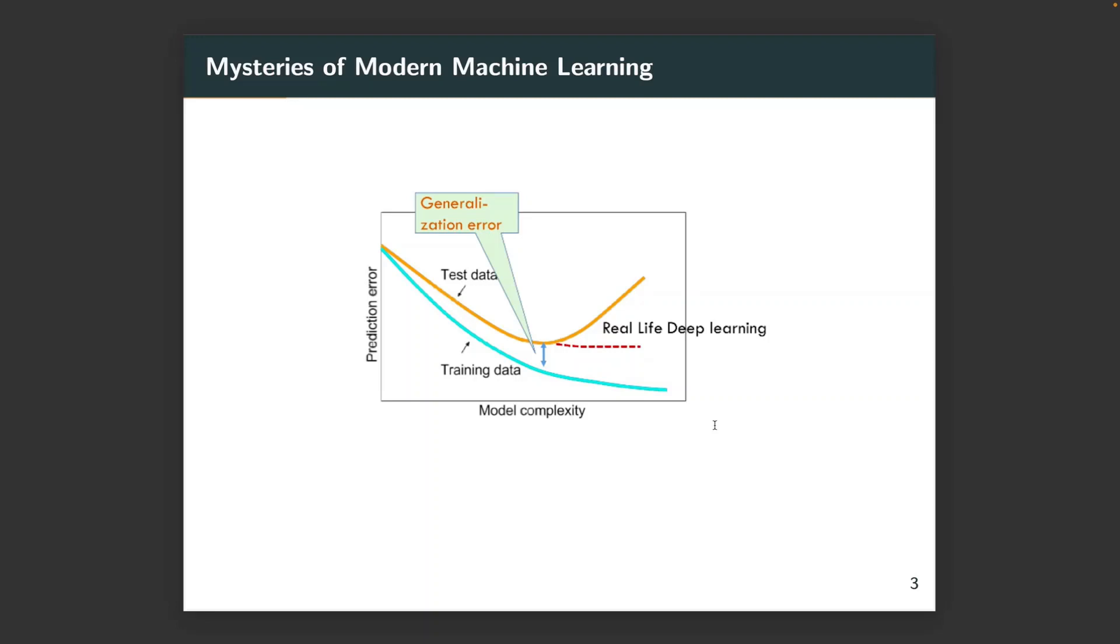However, for deep learning, the traditional generalization bounds cannot work. Even if neural networks are severely over-parameterized, they can still reach very good generalization performance. Actually, it has some special generalization pattern called double descent that attracts a lot of research efforts, but we will not talk about that in this talk.